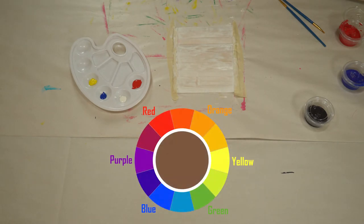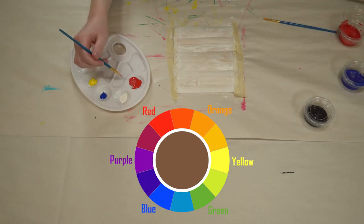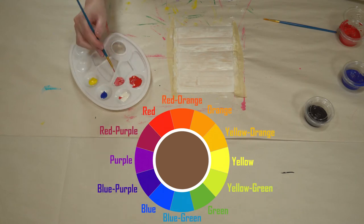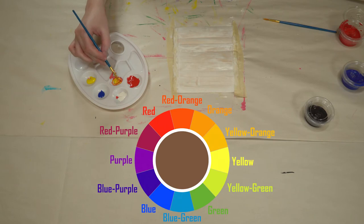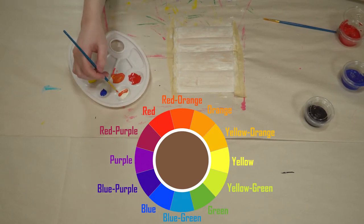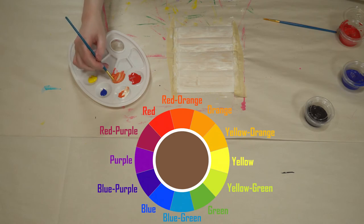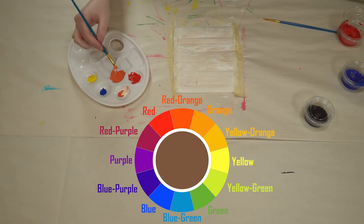When you mix a primary color with a secondary color, you get what's called a tertiary color. So for example, if you mix red with orange, you get red orange. If you mix blue with green, you get blue green. These are also known as teal or aqua or magenta, really cool colors. You can use all these colors in your painting.